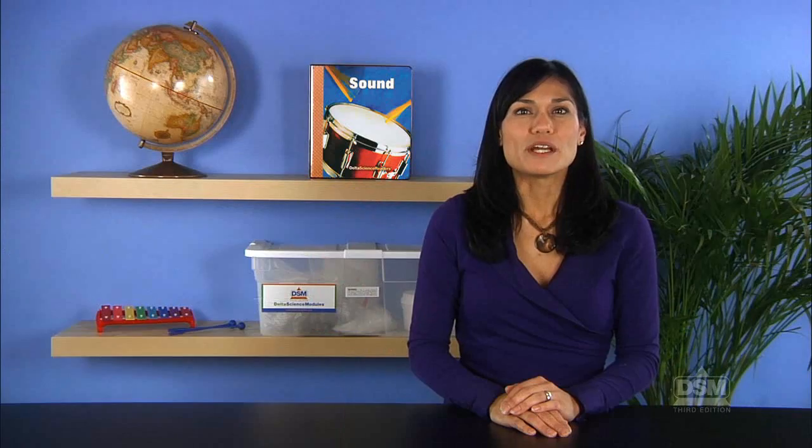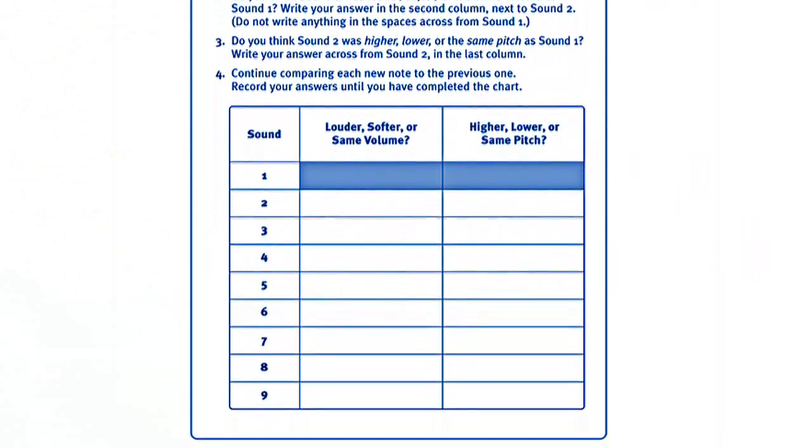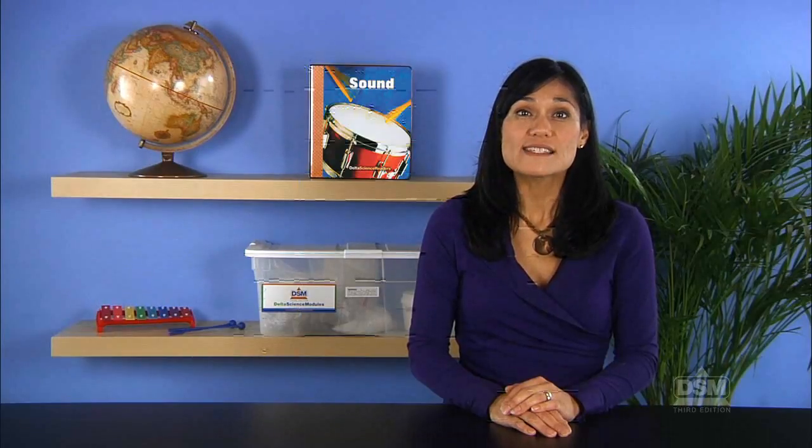Make a copy of Activity sheet 8. In the first column, write 9 musical notes to play on the xylophone in the last section of the activity.